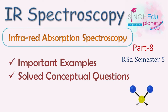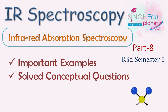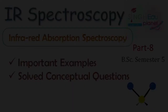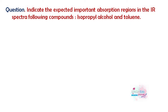Hello everyone, this is the final part of our chapter on IR spectroscopy. In many previous examinations, selective questions have been asked, so we will discuss those questions and I will explain the way to write the answers. The first question is: indicate the expected important absorption regions in the IR spectra of the following compounds — isopropyl alcohol and toluene.